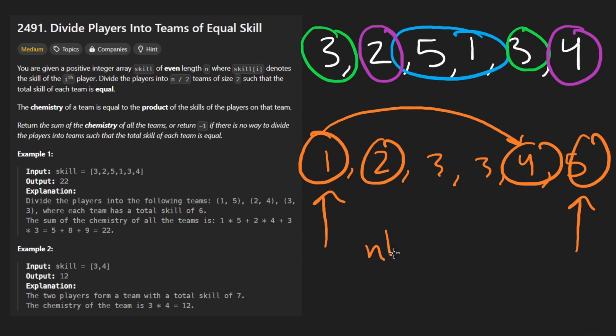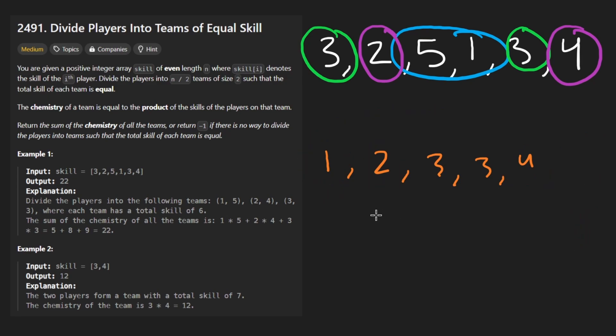And the two-pointer approach is going to be the linear part, but this is the bottleneck. We can actually do this problem without sorting, similar to how you solve two-sum the regular way, just by using a hash map to store the diff. Because as I showed, if we know for sure that the target, which is how much each group is going to have, is going to be 6, we know that for sure.